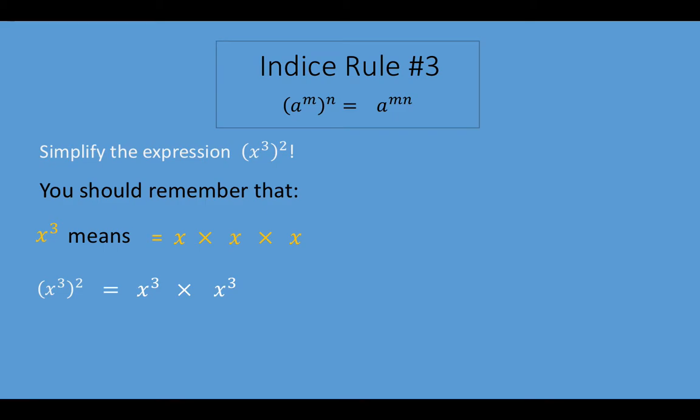So if we use these two ideas together, we can see that the first x cubed becomes x times x times x, the second x cubed becomes a further x times x times x, and altogether we have six x's all multiplying together, which is the same as x to the power of 6. So what we've just proven is that if you have x cubed all squared, the answer is x to the power of 6. This once again confirms the rule that if you have a power raised to a power, all you have to do is multiply together the two indices, and that will give you your solution.